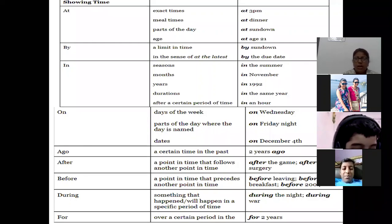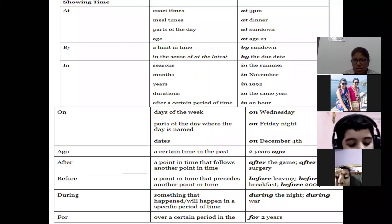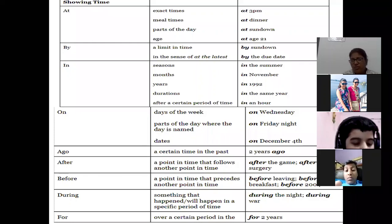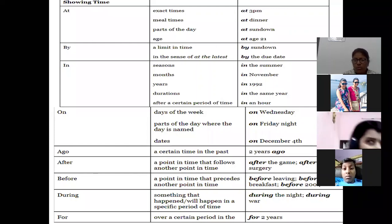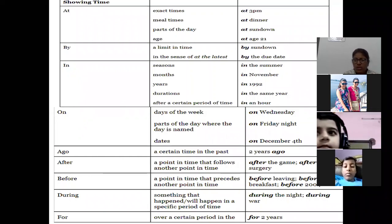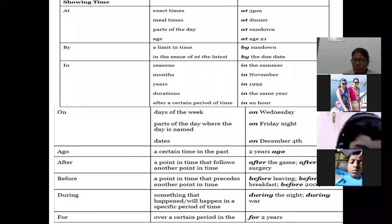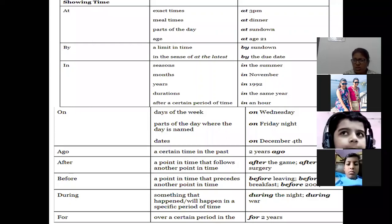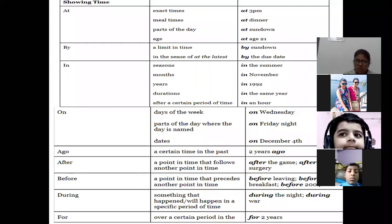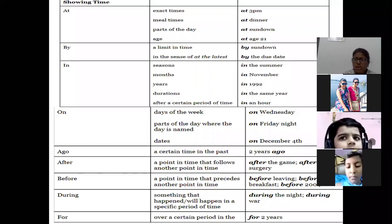When you want to say about the parts of the day where the day is named: he will come on Friday night, I will go there on Thursday morning. When you want to say something about dates: on December 4th we will have our sports day; on December 5th I will take a leap. Whenever you are saying something about a date, use 'on'.